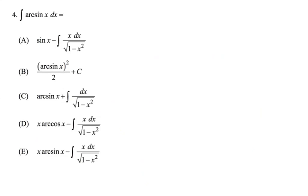Let's look at the next question — we have arc sine of x. I cannot think of an expression whose derivative is arc sine of x right away. So we can do this one by parts, just like earlier. We assume arc sine of x as f and dx as g prime. The f prime, meaning derivative of arc sine of x, would be 1 over square root of 1 minus x squared. And g would be x, the antiderivative of dx.